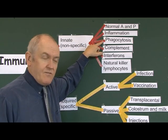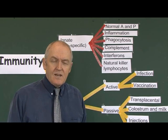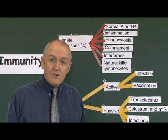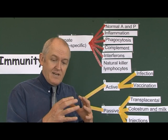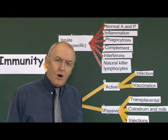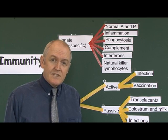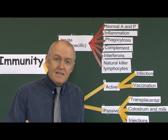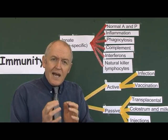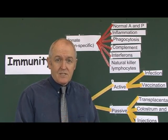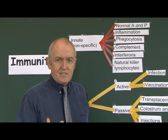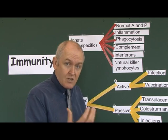Phagocytosis is involved in a lot of innate immune mechanisms — it literally means cell eating. Large cells called macrophages are phagocytic, as are smaller cells called neutrophils. They will eat bacteria and viruses. Another part of innate immunity is complement — a series of over 20 immune proteins found in the blood. The complement cascade is triggered by immunological reactions or by the presence of bacterial cells, and it promotes immunity and helps kill bacteria.